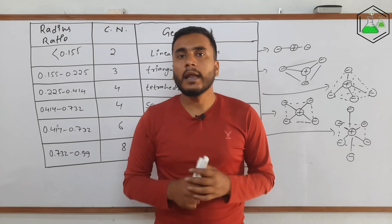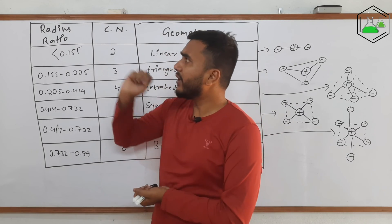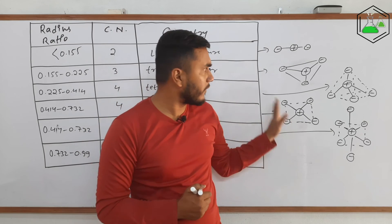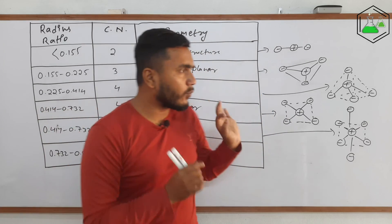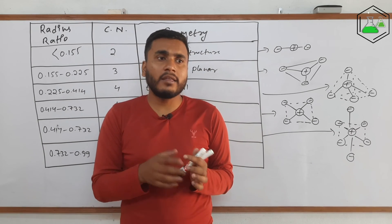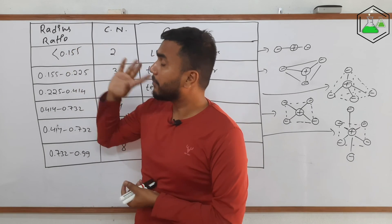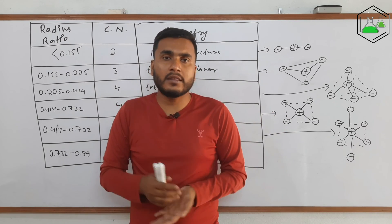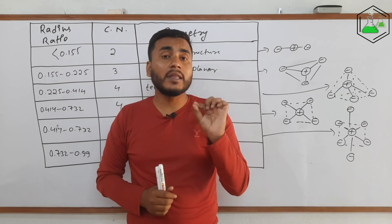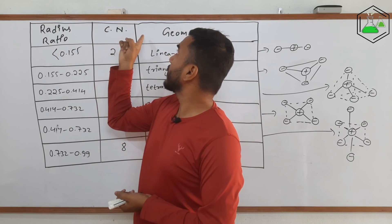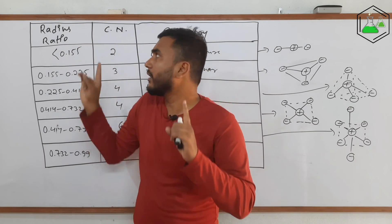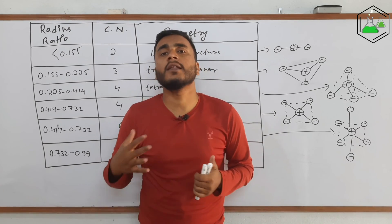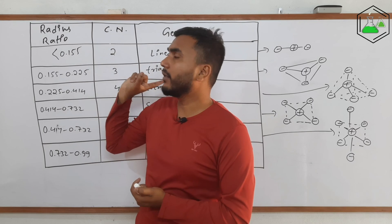An important question arises: can we rely on this radius ratio rule? The answer is no. We cannot fully rely on it, because for the stability of an ionic compound, one more factor plays an important role — lattice energy. Lattice energy is the main factor for stability, but in the radius ratio rule we do not take lattice energy into consideration, and there is also no polarization considered. So we cannot fully rely on this theory, but we can make predictions about the coordination number and geometry as a rough estimate.